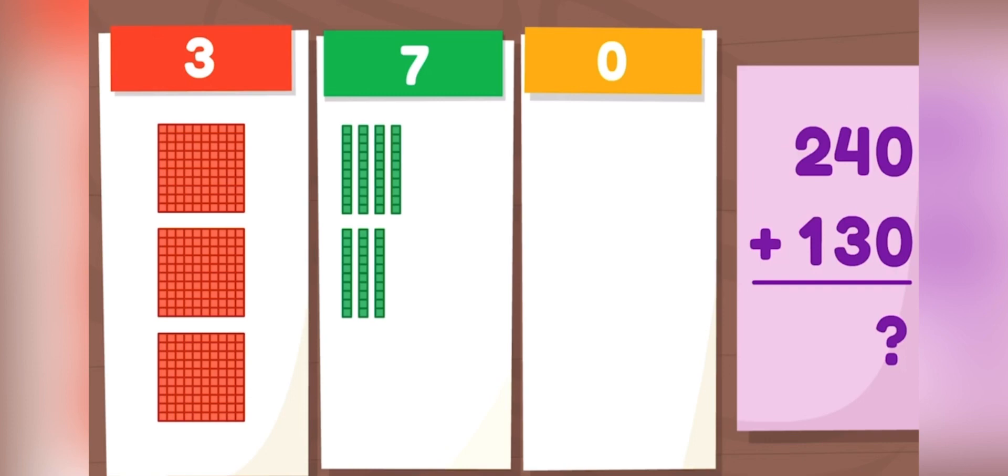Now let's see how many blocks we have total. We have one, two, three hundreds. One, two, three, four, five, six, seven tens. And zero ones. That means we have 370 total.